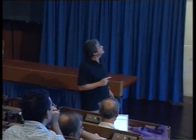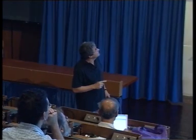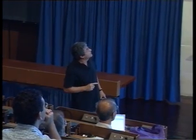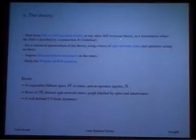So how is the theory defined? We'll start with general relativity or general relativity plus the standard model, or basically any other diffeomorphism invariant theory in which the basic variable is a connection. In general relativity, we use the Ashtekar formulation. You do a canonical quantization. Go to a basis of spin network states of the one that I just introduced. Impose diffeomorphism invariant study, the Wheeler-DeWitt equation.